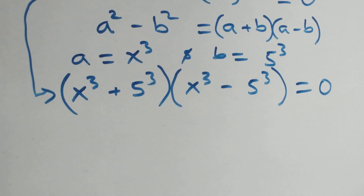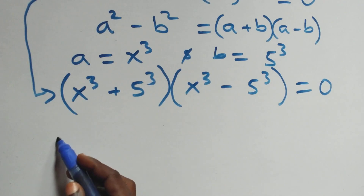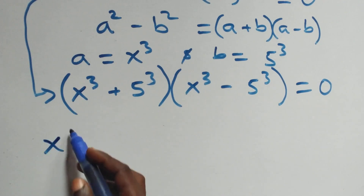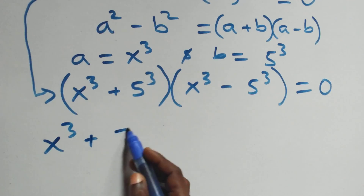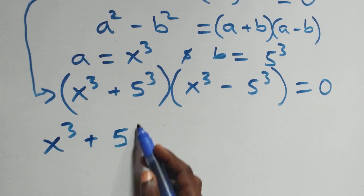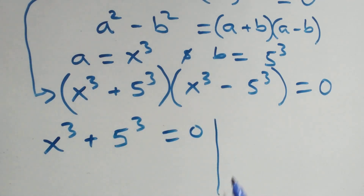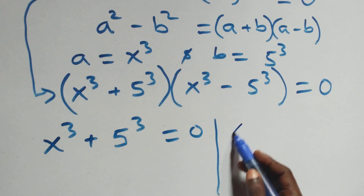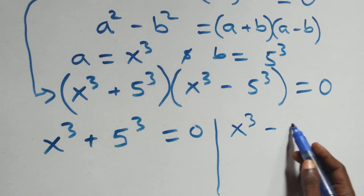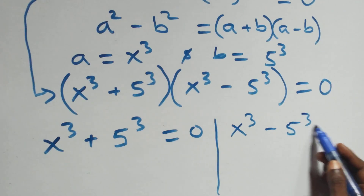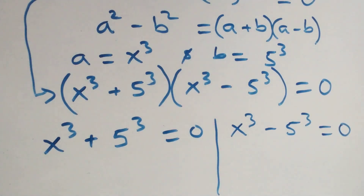And from here we have two possible cases. The first one: x cubed plus 5 cubed equals to 0. Or we have x cubed minus 5 cubed equals to 0.